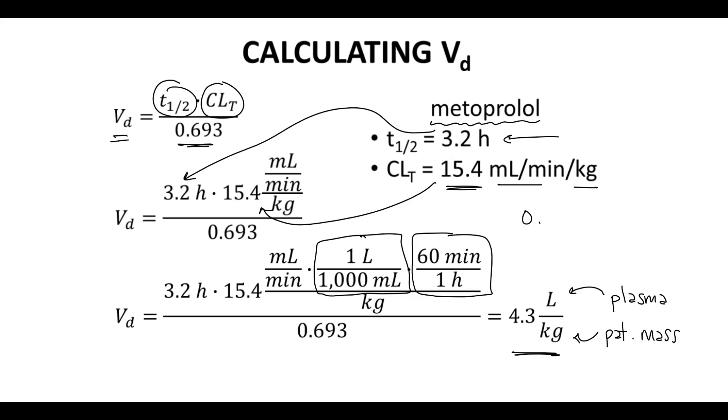The typical range for volume of distribution for oral drugs is about 0.1 to 100 liters per kilogram. Drugs with smaller VD values tend to concentrate mostly in the plasma. As you get higher volume of distribution values, the drug is more and more concentrated in the tissues.